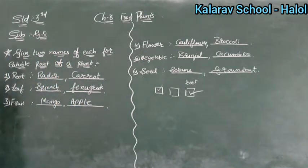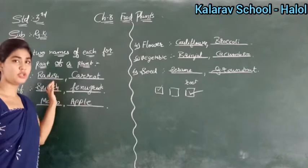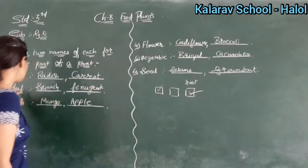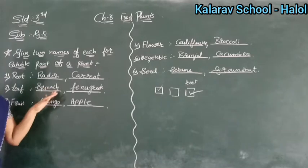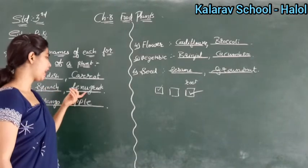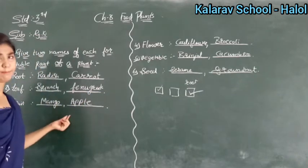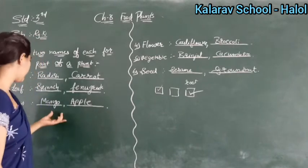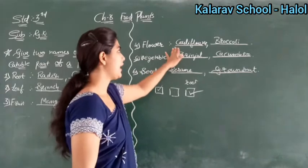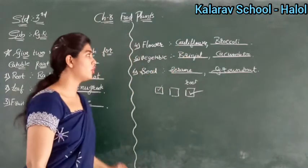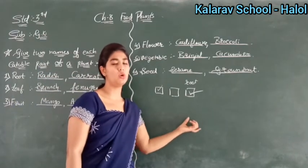Therefore we will revise. Root — the answer is radish and carrot. Spelling: R-A-D-I-S-H, radish; C-A-R-R-O-T, carrot. Next it is leaf — spinach and fenugreek. S-P-I-N-A-C-H, spinach. Then fenugreek: F-E-N-U-G-R-E-E-K, fenugreek. Fruit — mango, apple, banana, pomegranate — lots of types of fruits are there. If you have flower, which flowers do we eat? Cauliflower and broccoli. C-A-U-L-I-F-L-O-W-E-R, cauliflower. B-R-O-C-O-L-I, broccoli.